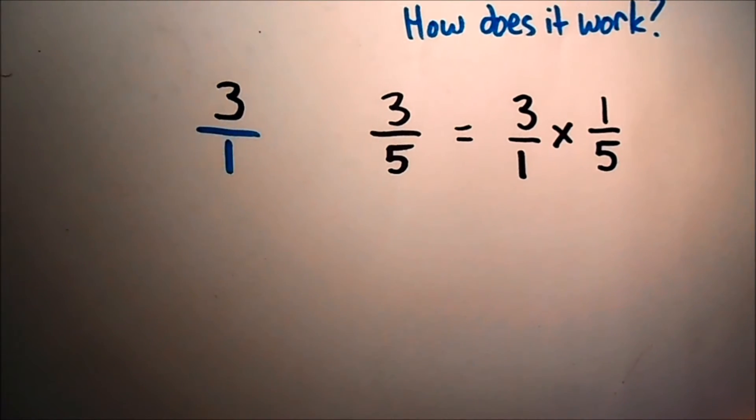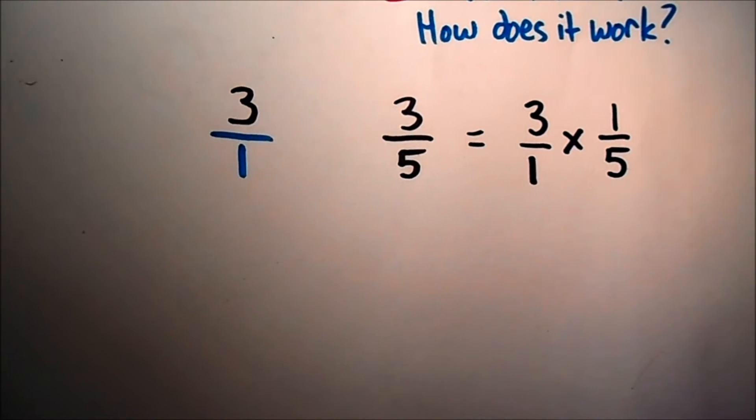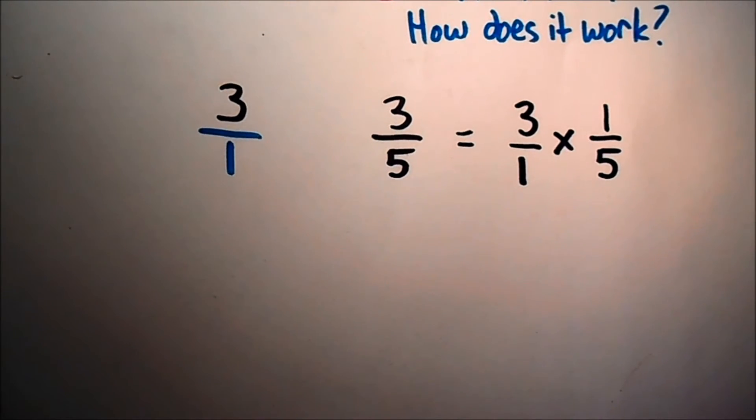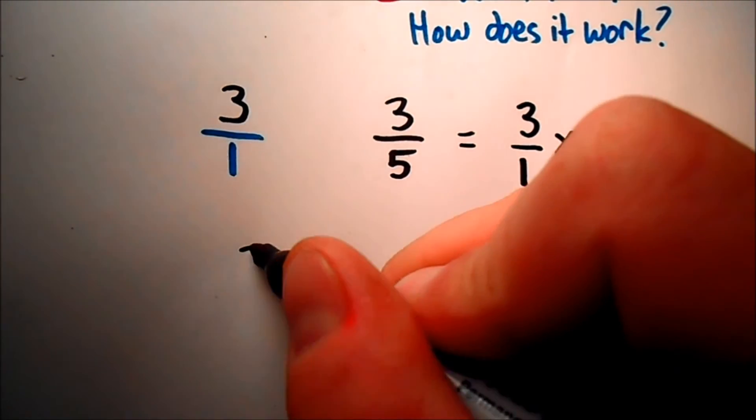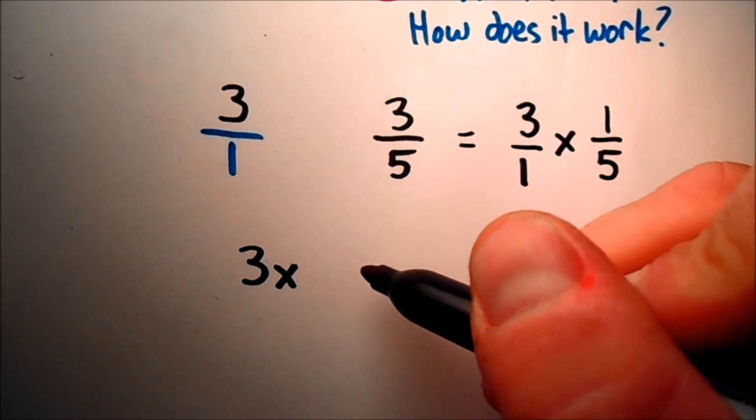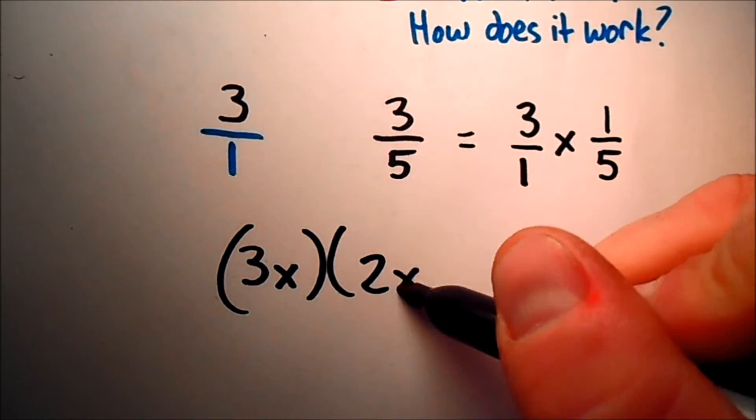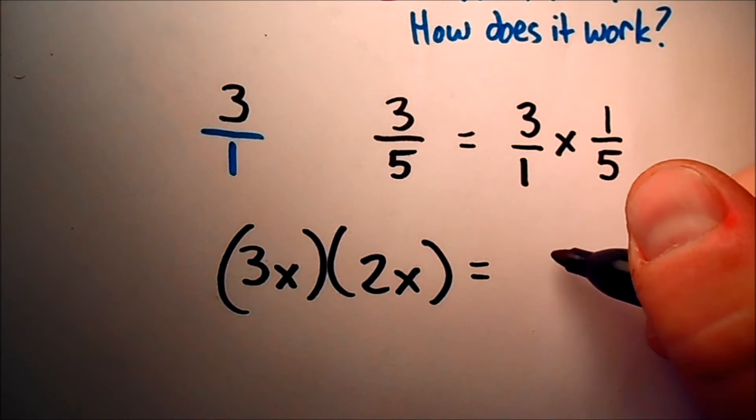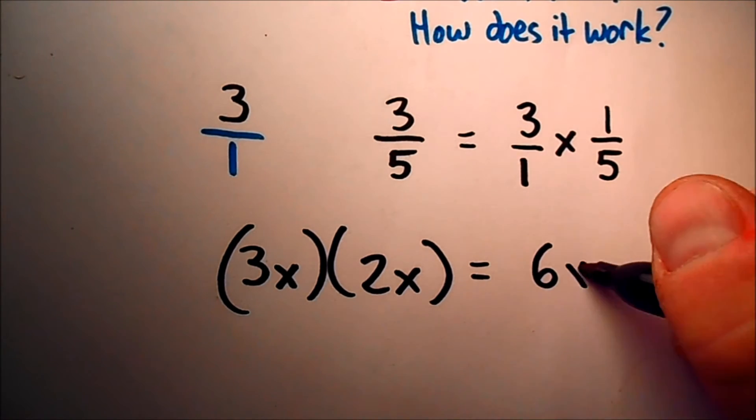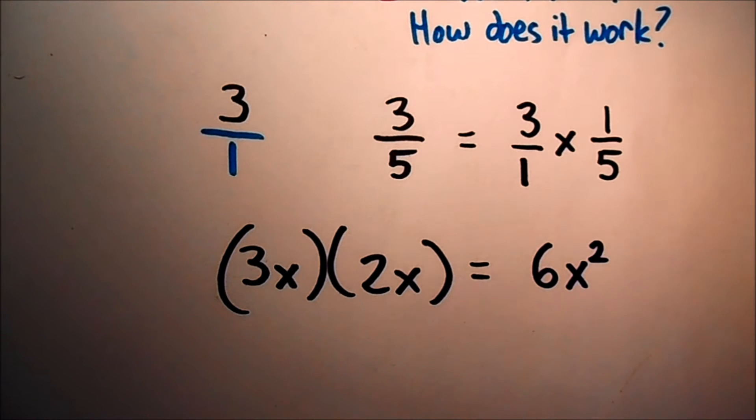The way dimensional analysis works is that units are treated just like variables in algebra. If I take 3x, and let's say I multiply that by 2x, your math skills hopefully are sharp enough already to where you know that that's going to be 6x times x, or x squared.